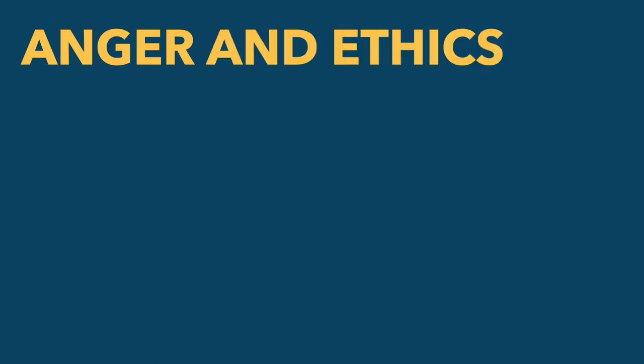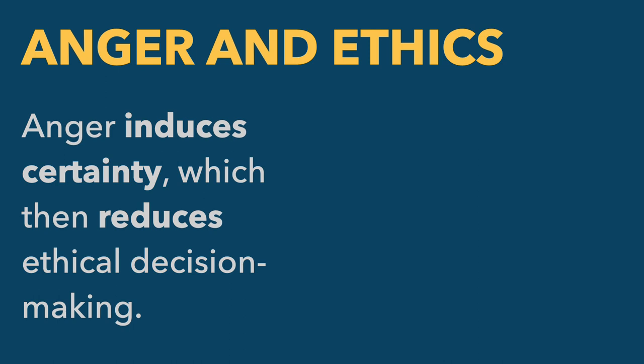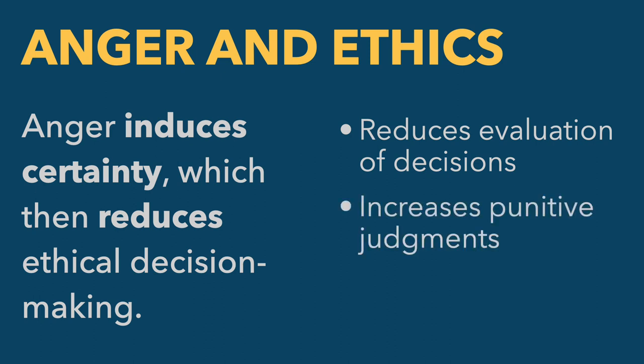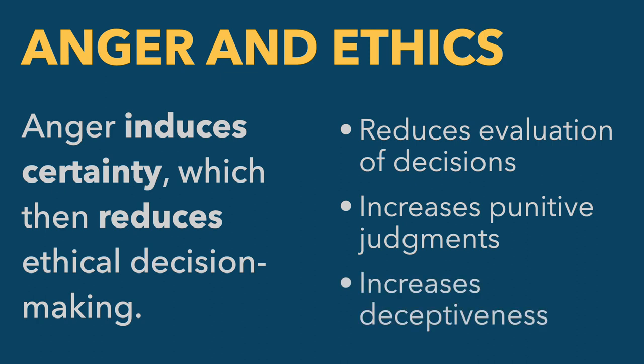Anger is also ethically dangerous. It induces certainty — when we're angry, we're sure, we're confident our perspective is right. It's pretty hard to be angry but also to doubt yourself. That kind of certainty can reduce ethical decision-making. The research shows that anger reduces the evaluation of decisions, so you spend less time thinking about whether a choice is a good one. It increases punitive judgments — you're more likely to jump to conclusions about somebody deserving punishment. And it also increases deceptiveness — people who are angry are more likely to lie.